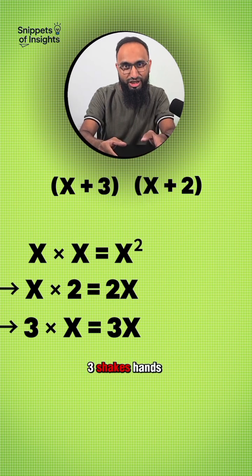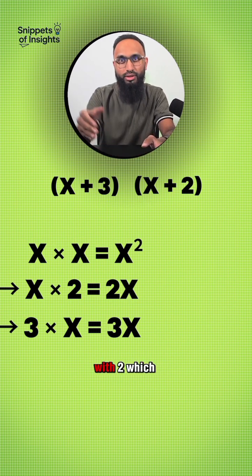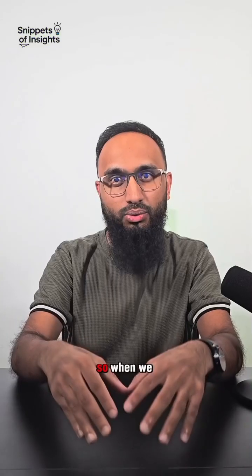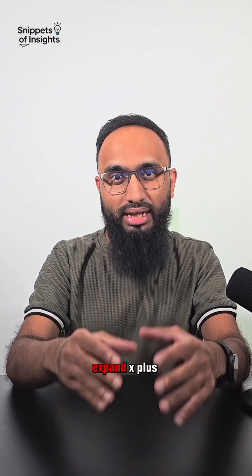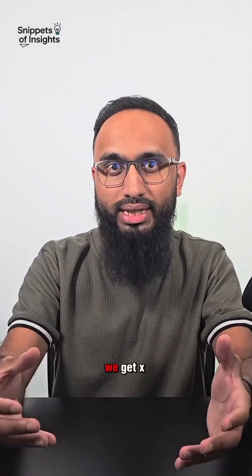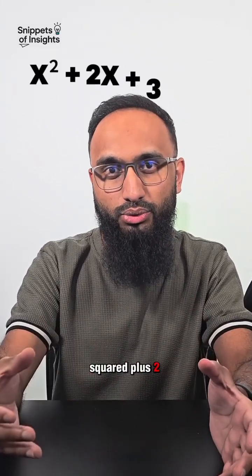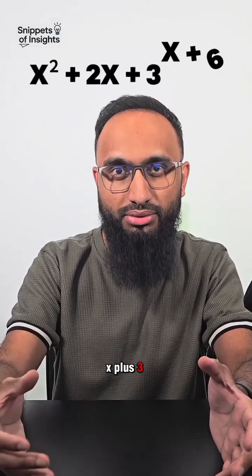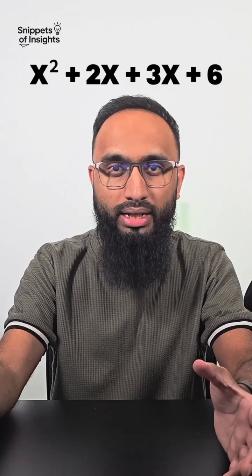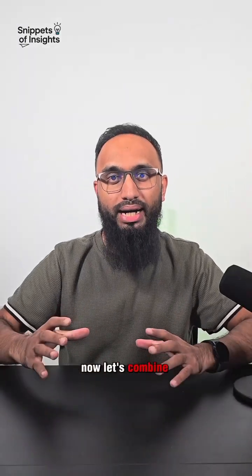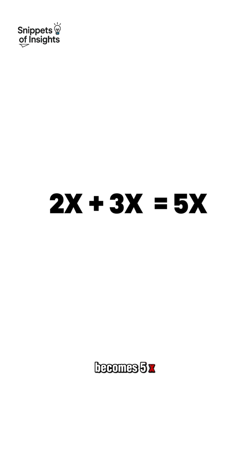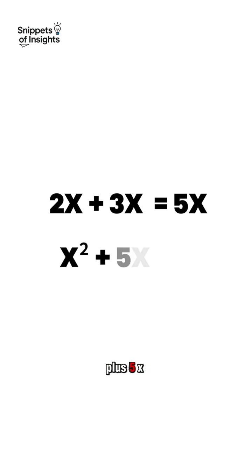And then lastly, three shakes hands with two, which is six. So when we expand x plus two and x plus three, we get x squared plus 2x plus 3x plus 6. Now let's combine the like terms — 2x plus 3x becomes 5x, and we're left with x squared plus 5x plus 6.